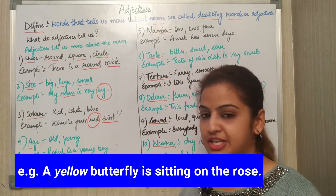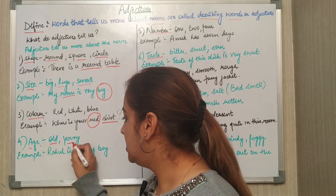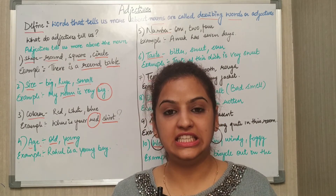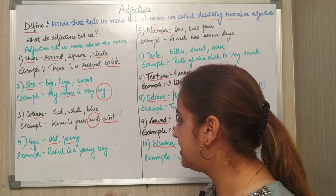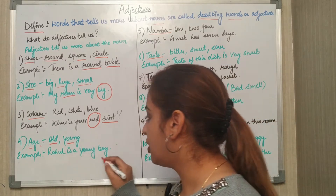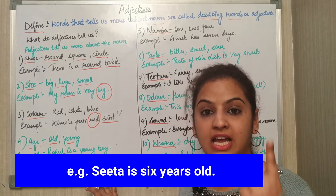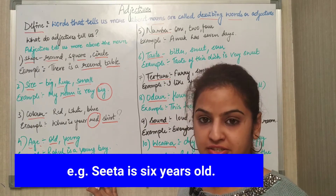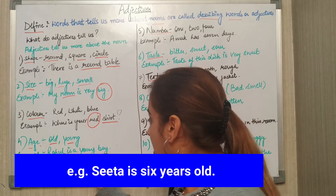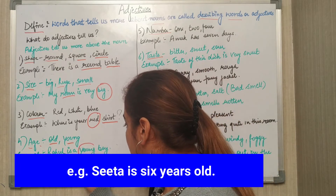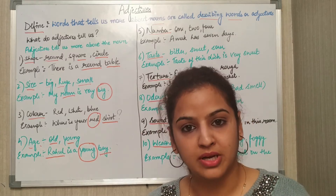Next is age — old, young, adult, teen — any age. Example: Rahul is a young boy. In this sentence there are two nouns and one adjective. 'Rahul' is a noun — a proper noun. 'Young' is an adjective. 'Boy' is a common noun.